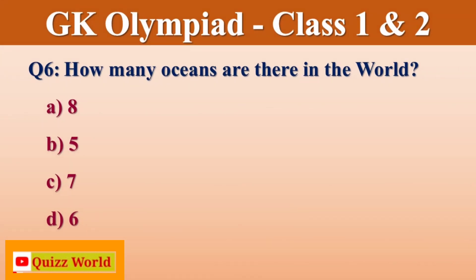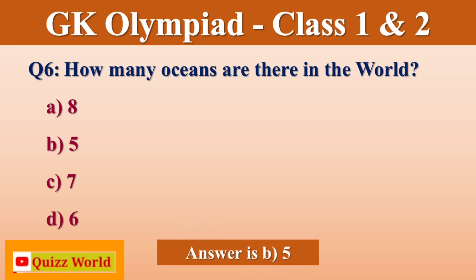How many oceans are there in the world? 8, 5, 7, 6. Right answer is 5.